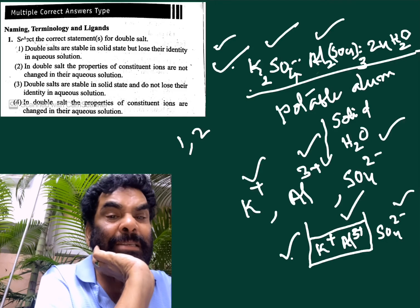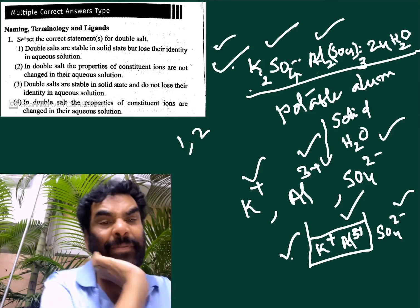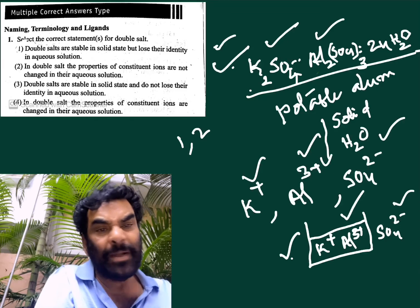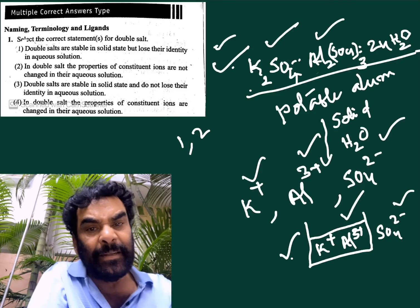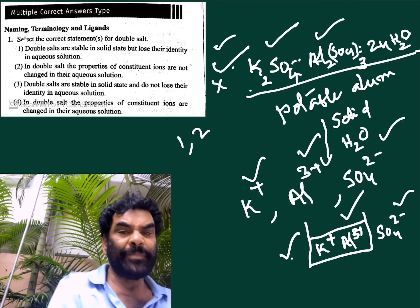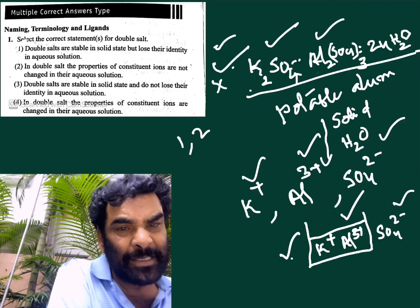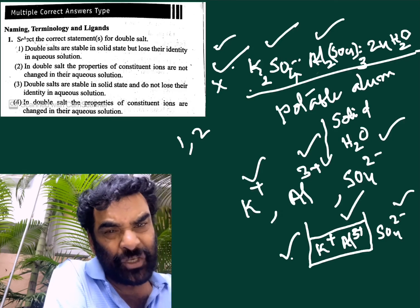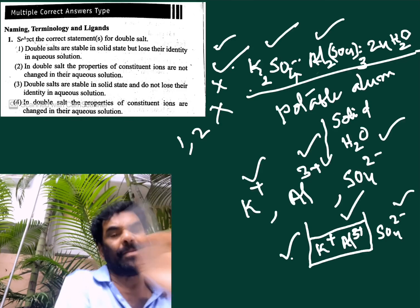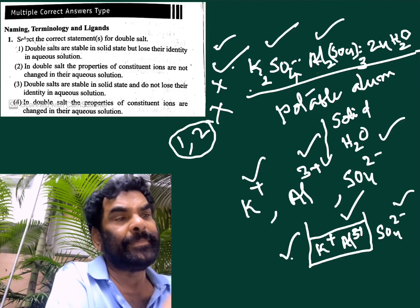Double salts are stable in solid state — correct. The third statement says they do not lose their identity in aqueous solution — but they do lose their identity in aqueous solution, so the first part is correct but the second part is wrong; the third statement is wrong. The fourth statement says the properties of the constituent ions are changed in their aqueous solution — no, that is also wrong. The ionic properties are not changed. So for this question, 1 and 2 are correct.